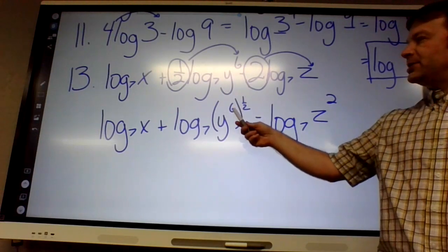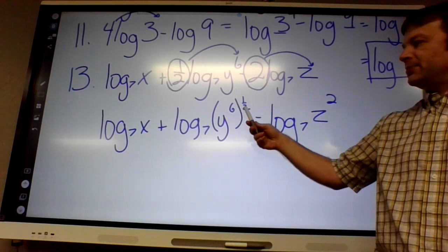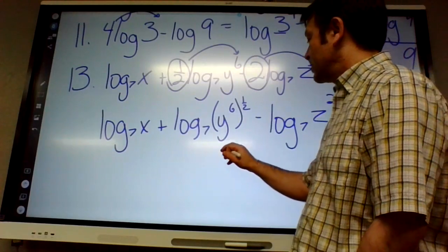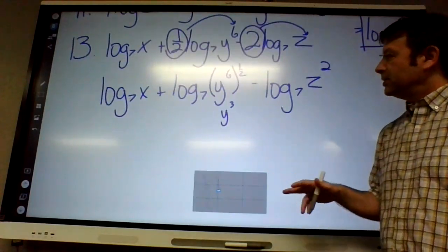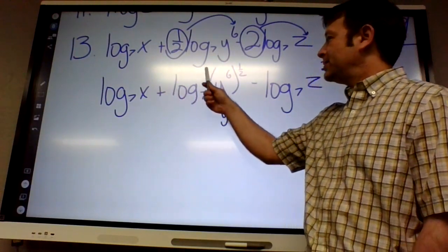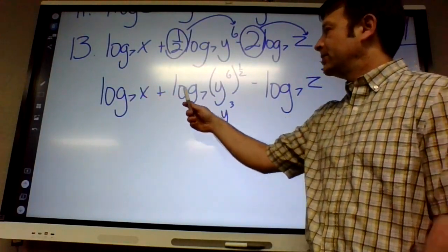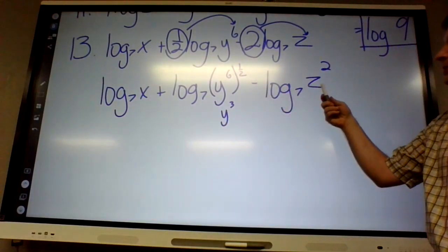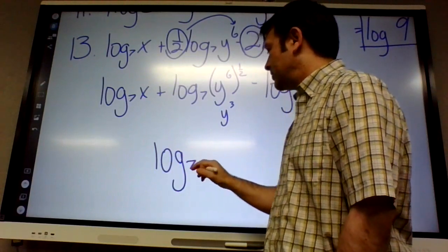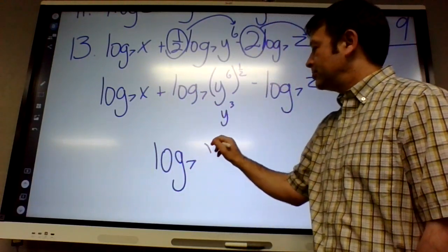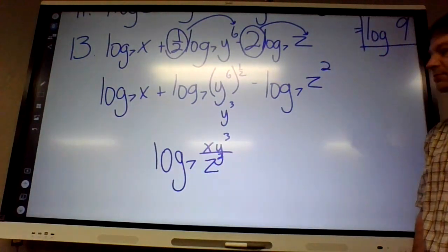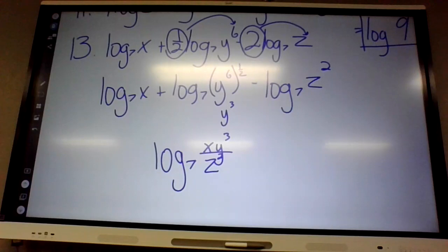What is y to the sixth to the one half? You multiply: six times a half - half of six is three. Now the first two are added together, so what do we do with added values? Multiply. So it's x times y cubed. And what do I do with the subtracted value? Divide. So it's log base 7 of x times y cubed divided by z squared.